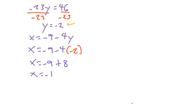We want to express our answer as an ordered pair. So we figured out that y is negative 2 and x is negative 1. And if we're asked to write that as a solution set, it would look like that.